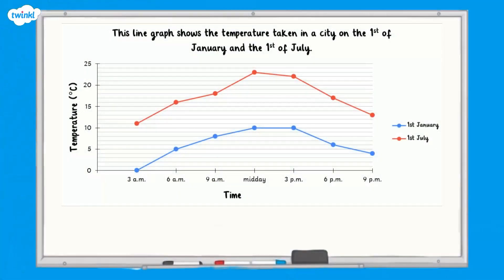Let's start by looking at this line graph that shows the temperature over the course of a day in Cardiff in January and July. First of all, let's make sure we understand the line graph. If you need more help with this, you could watch our Constructing a Line Graph video on the Twinkl website.